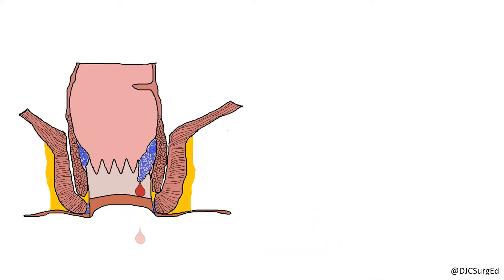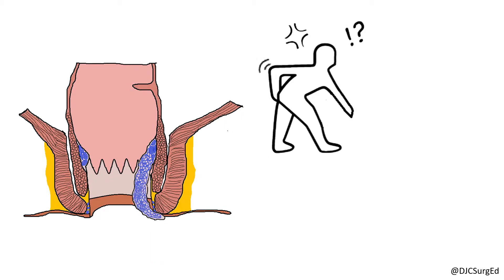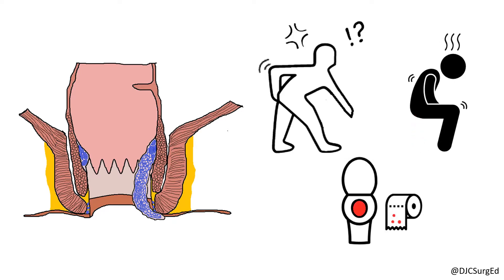Common symptoms of hemorrhoids include bleeding, discharge, burning, itching, and prolapse. Bleeding from hemorrhoids is typically described as bright red and occurring with bowel movements with spotting on toilet paper or in the toilet bowl. Pain is typically not associated with hemorrhoids unless there is an acute thrombosis, usually of external hemorrhoids.